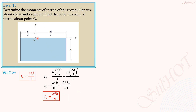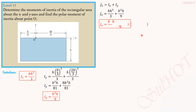For the polar moment of inertia about point O, it is Ix plus Iy. So Jo, or Io, equals Ix plus Iy, or Iz equals Ix plus Iy. Substituting, Jo equals bh³ over 3 plus b³h over 9. Factoring out bh over 9, we get Jo equals bh over 9 times the quantity (3h² + b²), or equivalently bh over 9 times (b² + 3h²). That's the polar moment of inertia.